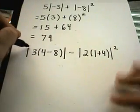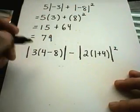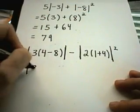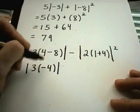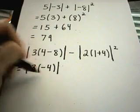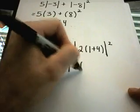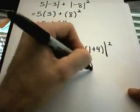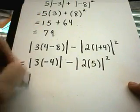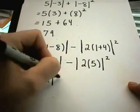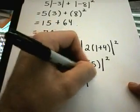I'm going to simplify everything down inside the absolute value to begin with. And then just go from there. So, 4 minus 8 is negative 4. Even though it's a negative 4, I'm going to just keep working on the inside. Minus 2 times 1 plus 4 is just 5 squared. So, 3 times negative 4, that's negative 12.